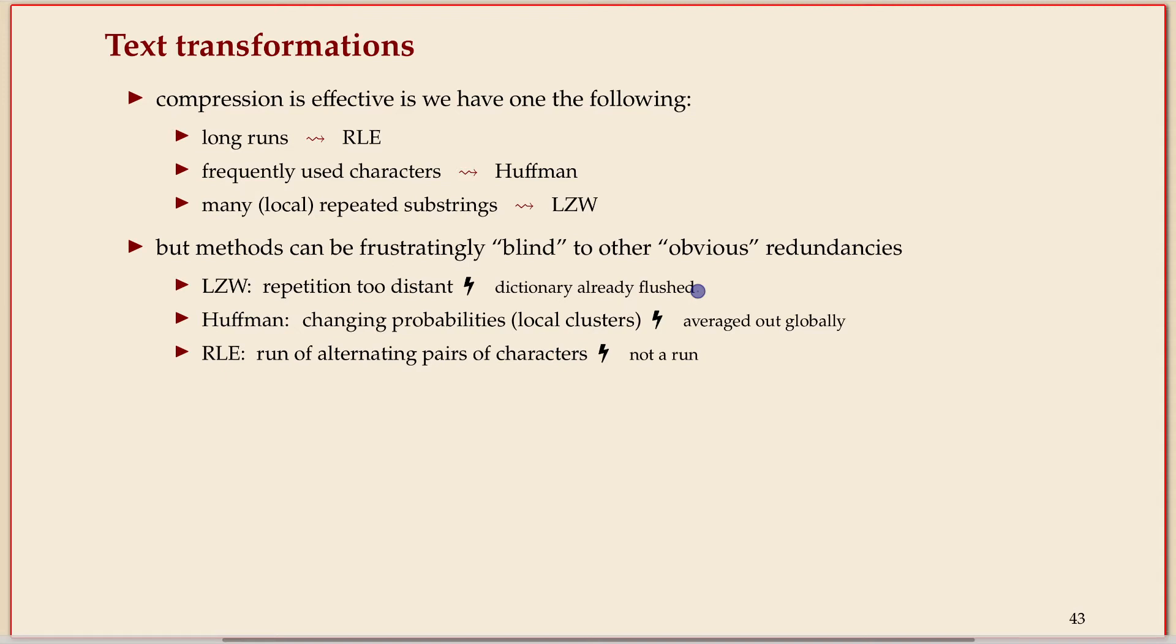Huffman coding - suppose the first half of the text is all a's and the second half of the text is all b's. Huffman would still say use one bit per character and then the compressed text would essentially look the same as the source text, whereas obviously something like run length encoding would work well in this case.